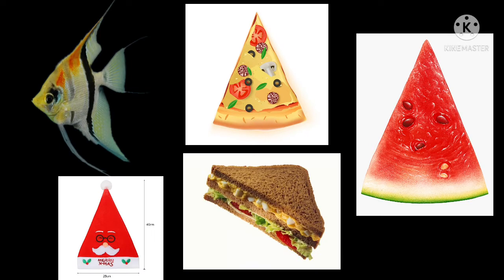So children, right now we have seen different types of objects — a Santa cap, a slice of pizza, a slice of watermelon, a sandwich, and an angel fish — and these are all triangle in shape. You may find many more things at home that are triangle in shape.